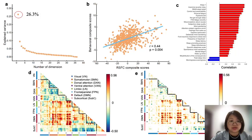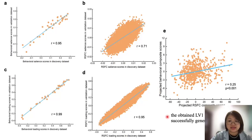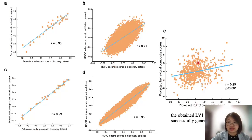We then tested the cross-dataset replicability and generalizability with a replication dataset. As internal validation of the latent variable obtained in the discovery dataset, we first replicated the PLS analysis with the replication dataset. Again, only the first latent variable remained significant. We further tested cross-dataset generalizability by projecting dataset 2 onto the salience parameters learned by the PLS analysis in dataset 1, then examining the correlation between the behavior and resting-state functional connectivity composite scores in dataset 2.